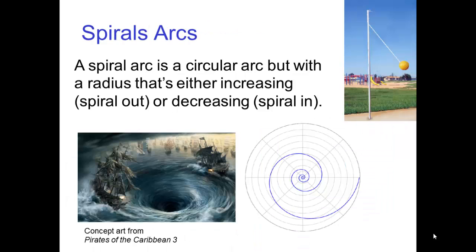A spiral arc is a circular arc, but with a radius that's either increasing, spiral out movement, or decreasing, spiral in.